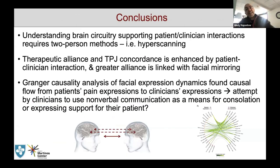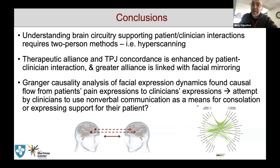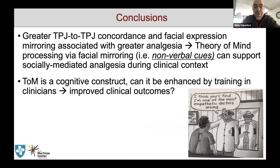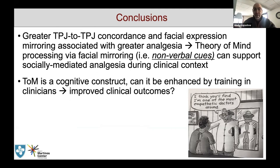Our conclusions: understanding the brain circuitry supporting patient-clinician interactions requires two-person methods such as hyperscanning. Therapeutic alliance and TPJ concordance is enhanced by patient-clinician interaction, and greater alliance has been linked with facial mirroring. Granger causality analysis applied to facial expression dynamics shows that patient expressions are leading the clinicians — the clinicians are trying to follow their patients' expressions to build alliance. Greater TPJ-to-TPJ concordance and facial expression mirroring is associated with greater analgesia, suggesting that theory of mind processing via facial mirroring — i.e., nonverbal cues — can support socially mediated analgesia in the clinical context. Theory of mind as a cognitive construct can be enhanced by training clinicians and patients to improve clinical outcomes.